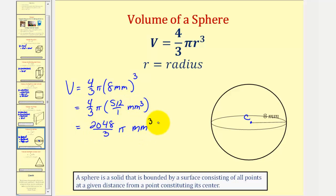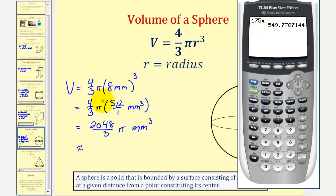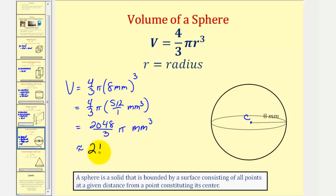Let's get our decimal approximation by approximating pi using the calculator. We put our fraction in parentheses: open parenthesis, 2048 divided by three, then times pi. Rounding to two decimal places, this would be approximately 2144.66. So we have approximately 2144.66 cubic millimeters.